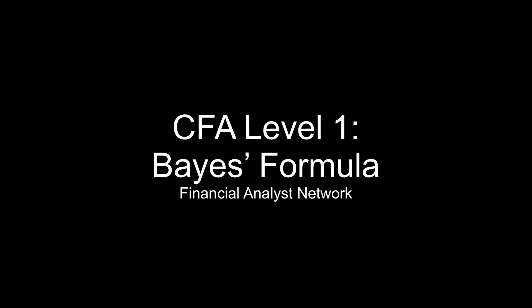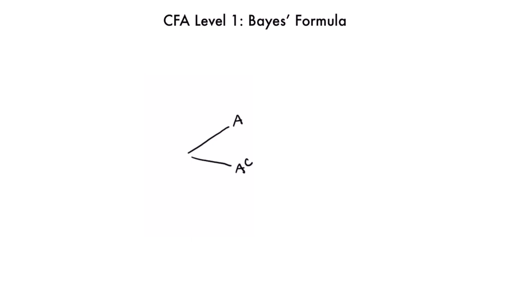Bayes' formula is used to update the probability of an event because you now know a piece of information that changes that probability. Looking at a tree diagram, either A or AC (the complement of A) happens. If A happens, B or BC could happen; same for AC. A tree diagram goes left to right where A or AC happens first, then you find the probability of B given A. But Bayes' formula works in reverse — knowing that B happened, you ask what's the probability of A now that you know B happened.